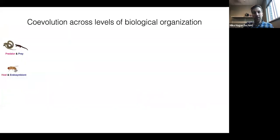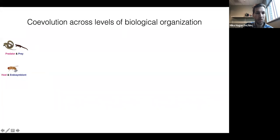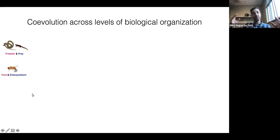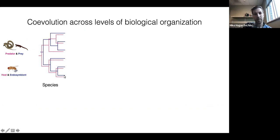We can think about co-evolution broadly across different levels of biological scale. If we think of a simple co-evolutionary relationship between predator and prey, or at the opposite end, host and endosymbiont, starting at the most macroscopic scale, you can imagine thinking about co-evolution at the phylogenetic scale, where if you look at the evolutionary history of predator and prey or host and endosymbiont and see this pattern of co-divergence and co-speciation between these two co-evolving organisms, you might infer they have an extended co-evolutionary relationship.